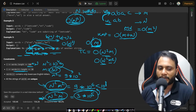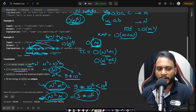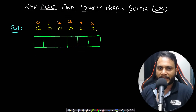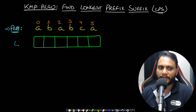If it required KMP to pass, it would have been marked as medium. Looking at other constraints: every word contains only lowercase English letters and all strings in the words array are unique — so no words are repeating. Let's recap the KMP algorithm. Consider pattern ABABCA — how do we find the LPS array?